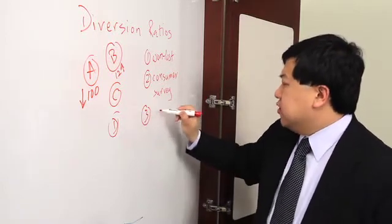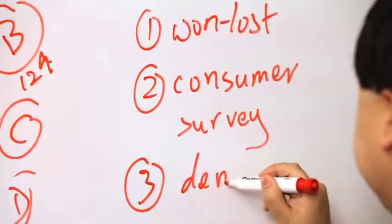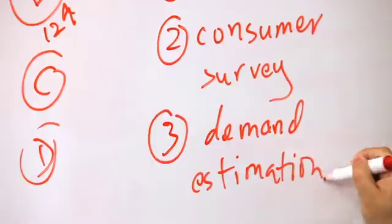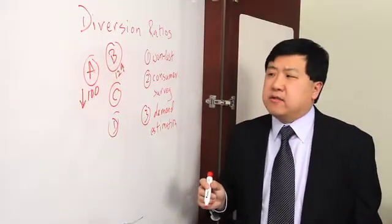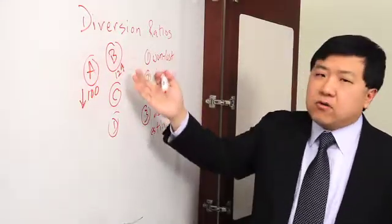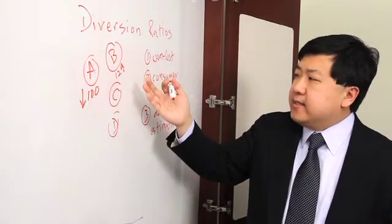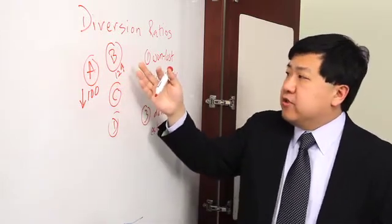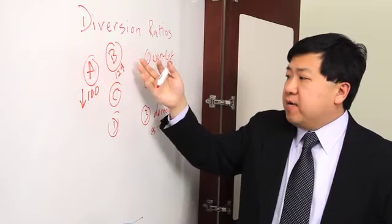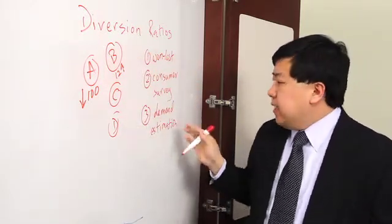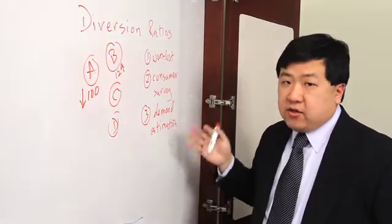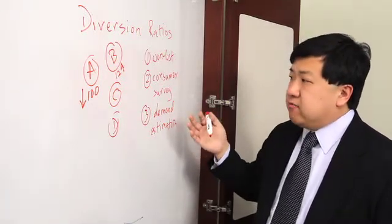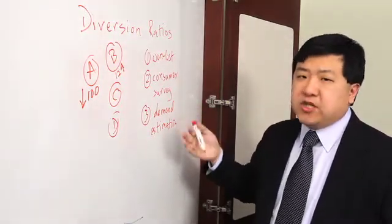The third approach I want to mention, just for the sake of completeness, is demand estimation. So if you had a really rich data set, if you had lots of data on prices and quantities and so forth, you could estimate a whole set of own price and cross-price elasticities between all of the relevant products. So you'd know if the price of A went up a little bit, how much would demand for B go up, how much would demand for C go up, and so on. Now, that's a complicated thing to do, and you need a rich data set to do it. If you could do it, that's great. But if you've done that, you've got really all the information that you need to do a full-blown merger simulation analysis.